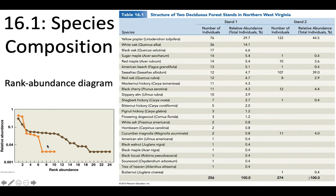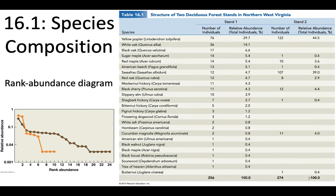You can get a lot of information from comparing these diagrams. Stand one is much more diverse than stand two because it has more species and more rank abundance numbers. If a community is more even in the number of species present, it's going to have a less steeply sloping curve. If there's a lot of unevenness where one species like yellow poplar tends to dominate, you're going to see a steep curve. Make sure you're able to interpret rank abundance diagrams for the exam.